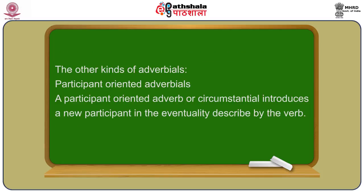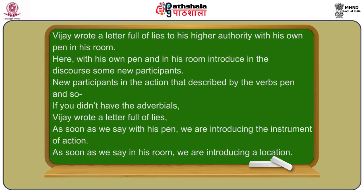The other kind are participant-oriented adverbials. A participant-oriented adverb or circumstantial introduces a new participant in the eventuality described by the verb. Suppose I say: Vijay wrote a letter full of lies with his own pen in his room. With his own pen and in his room introduce new participants in the discourse. With his own pen introduces the instrument of the action; in his room introduces the location of the action.